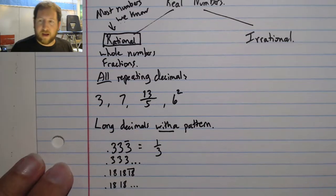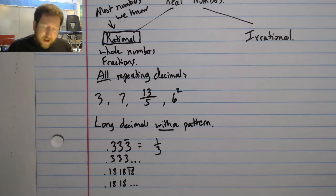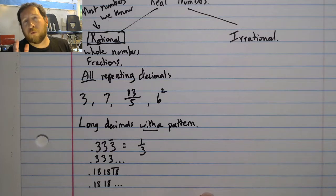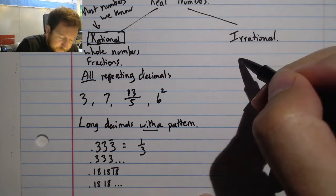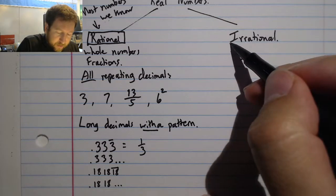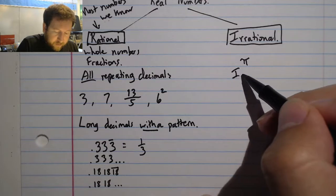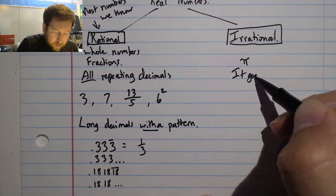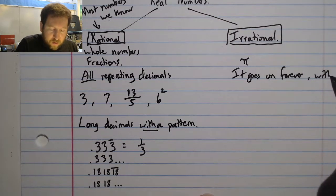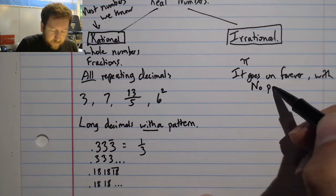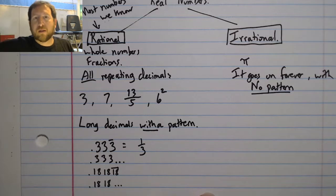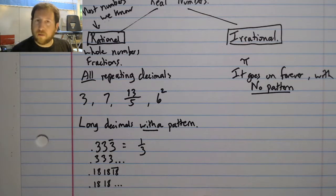Even the decimal number 0.181818 repeating, or I can write it as 0.1818 with the ellipses after I've established that there's a pattern, is a rational number. However, we have our irrational numbers. Before, we really only knew one irrational number in our whole set of numbers, and this is the number pi. The number pi is different than the rational numbers because it goes on forever with no pattern.